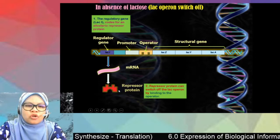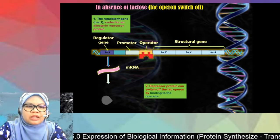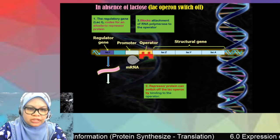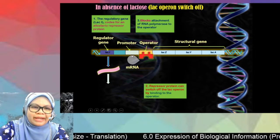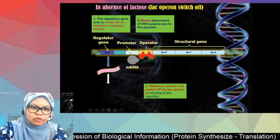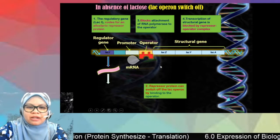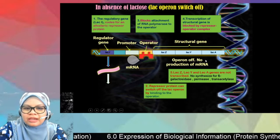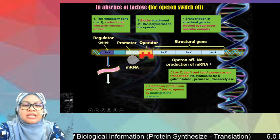The mechanism when lactose is absent: the regulator gene codes for repressor protein, and the repressor protein binds to the operator. The binding of repressor protein to the operator blocks the attachment of RNA polymerase to the promoter. Since RNA polymerase cannot bind to the promoter, it cannot start transcription, and the structural genes cannot be transcribed. Therefore, no mRNA is produced.